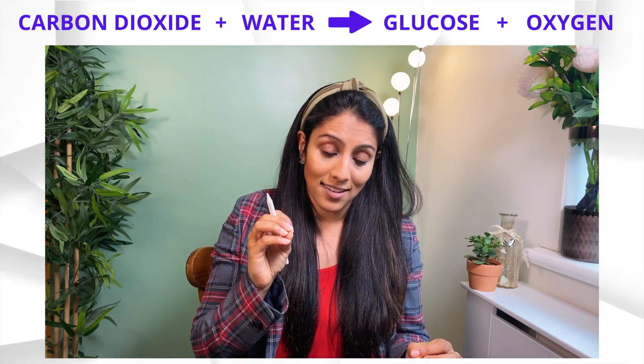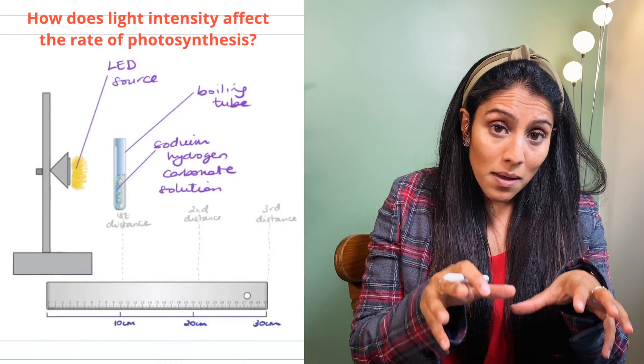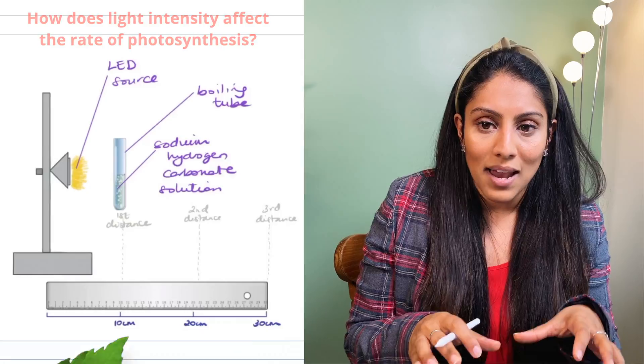So the required practical, the essential practical that you need to know for your GCSEs is one that looks like this. Now you might remember doing this in one of your lab lessons. With all science experiments you need to identify three different variables.